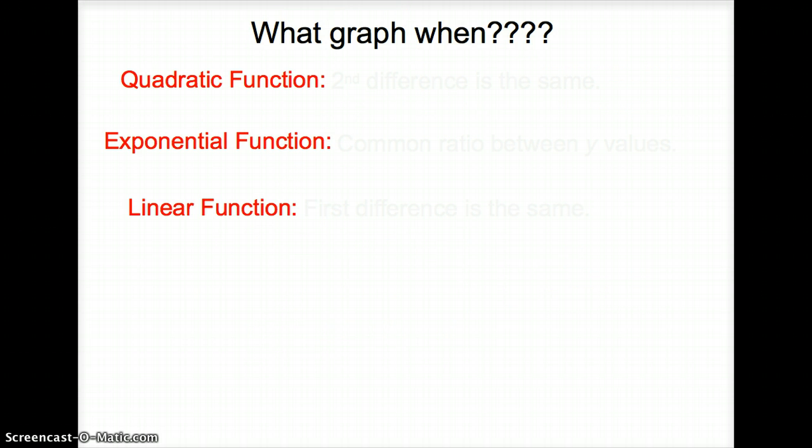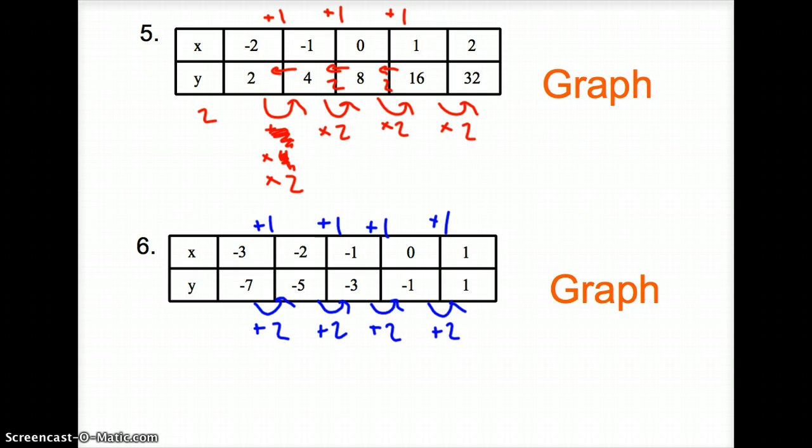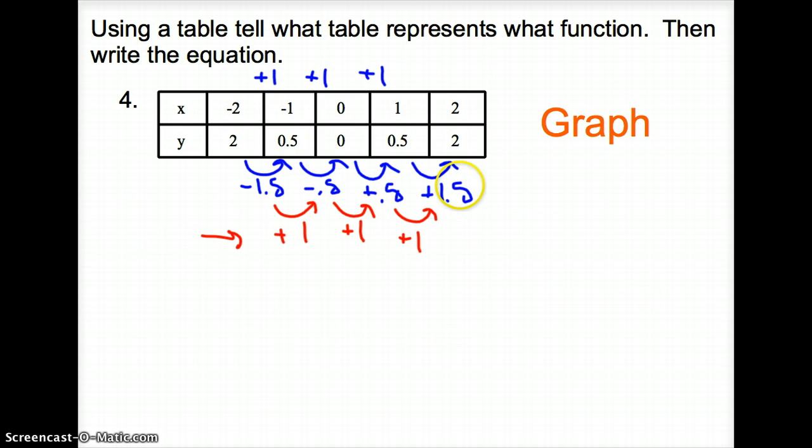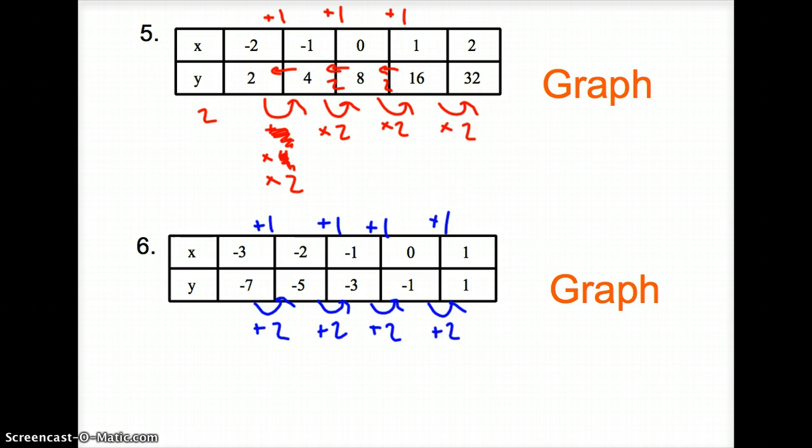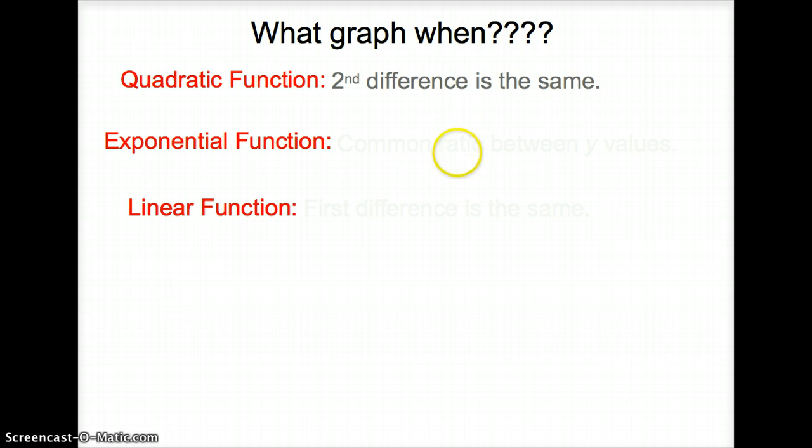And finally, to round it all off, what graph do we have when what happens? A quadratic function graph, remember, was the second difference was the same. We look here at number 4. The red was the second difference. Blue was the first difference. Red was the second difference. When the second difference is the same, it is a quadratic function.